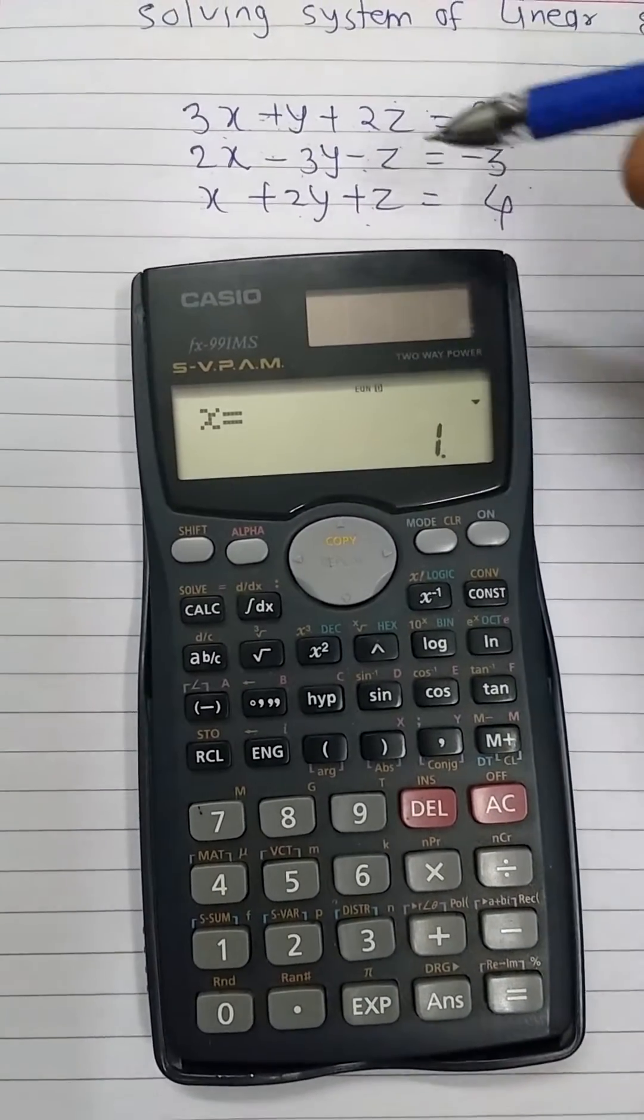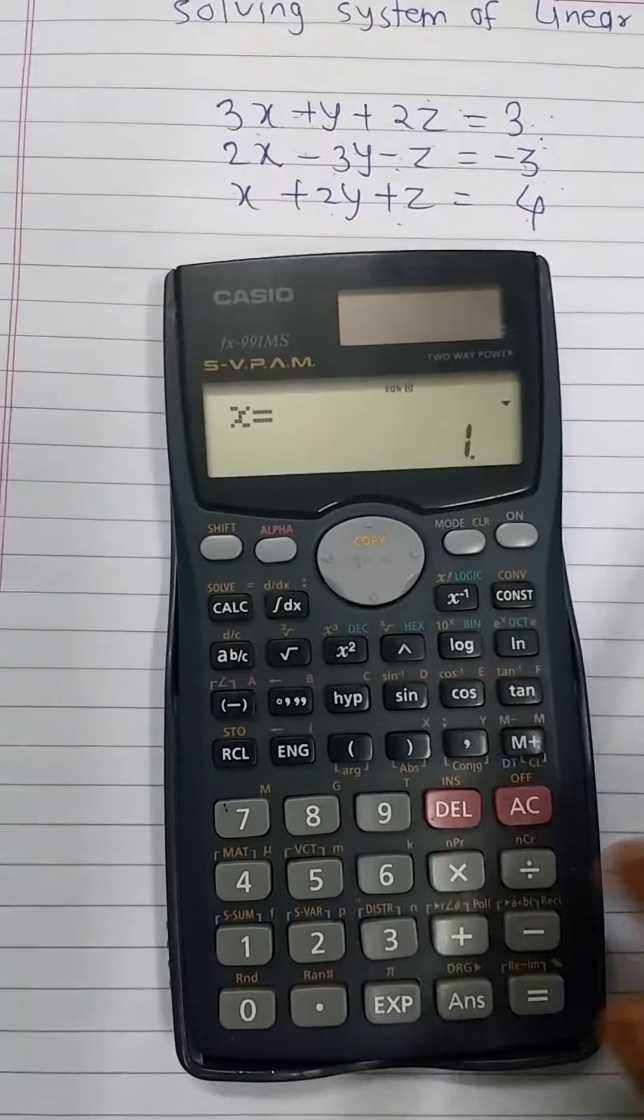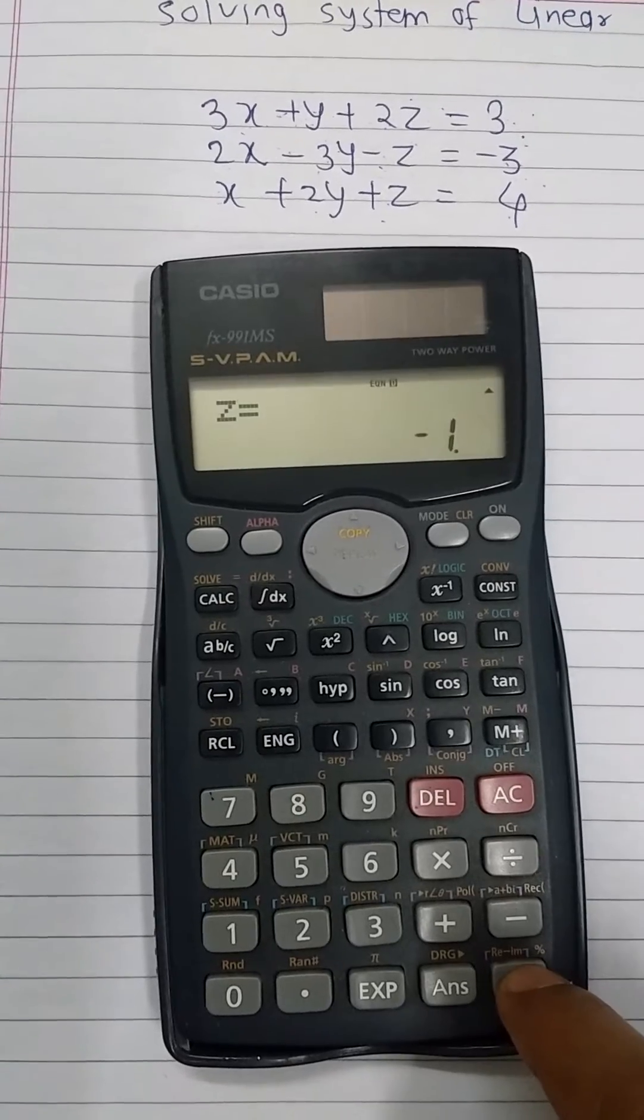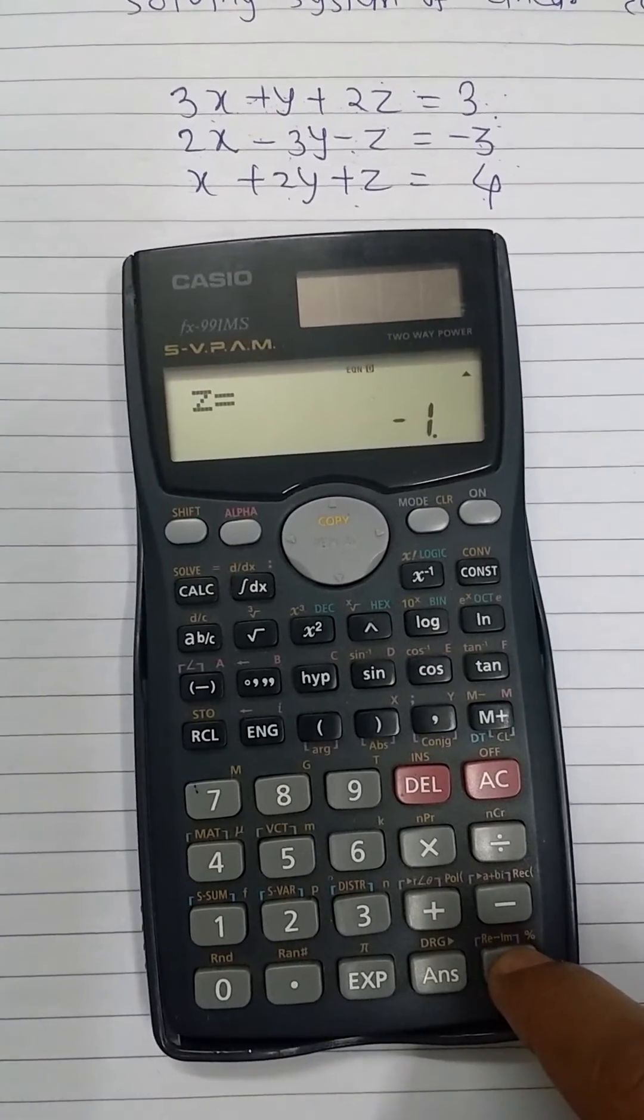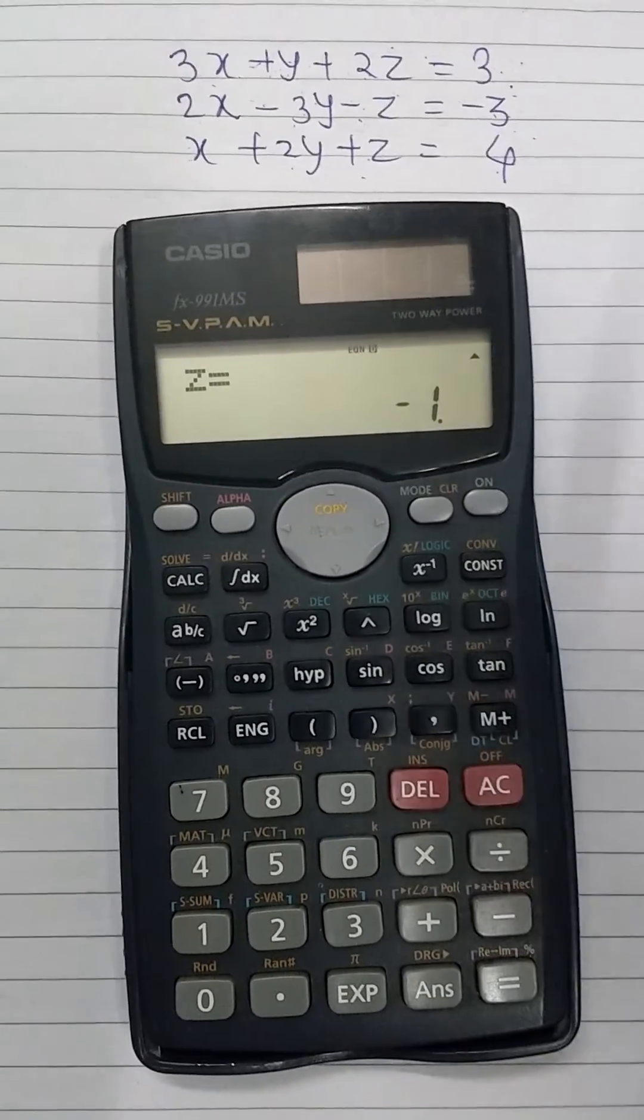After putting all the entries, we get the solution: x is equal to 1. After pressing equal button, we get y is equal to 2, and z is equal to minus 1. In this way, we can solve the system of linear equations. Thank you.